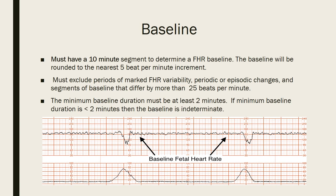First we need to determine what our baseline is. We have to have at least a 10-minute segment to figure out what our baby's baseline is. The baseline is going to be where the fetal heart rate hits most frequently over that 10-minute period, and we're going to round to the nearest five beats per minute. Our normal fetal heart rate is anywhere between 110 and 160. We can't figure out a baseline if the baby is having any decelerations or accelerations, so we have to look in between those points.